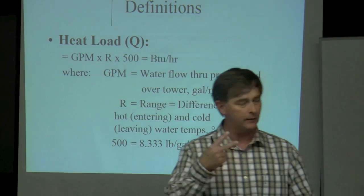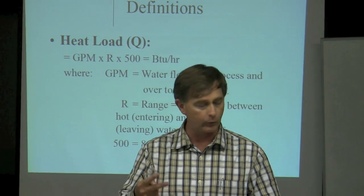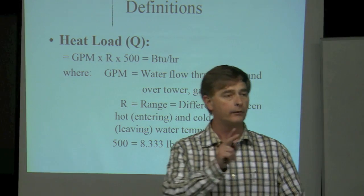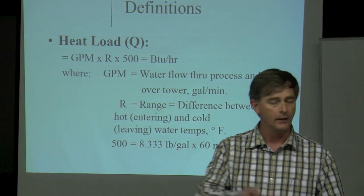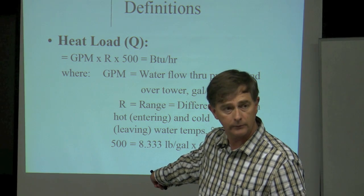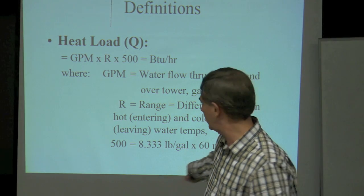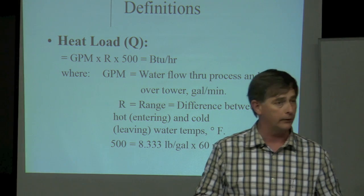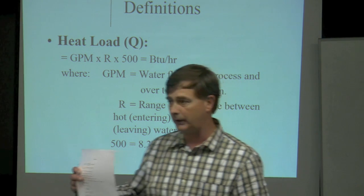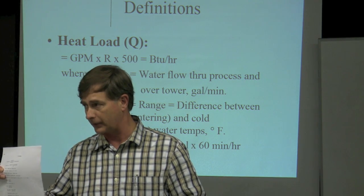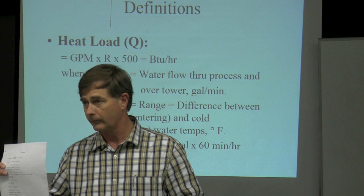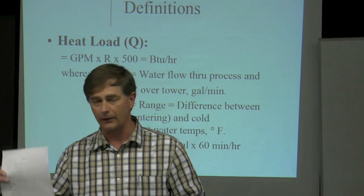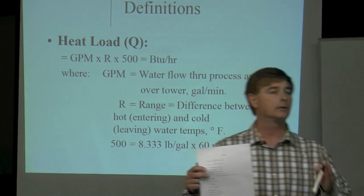If you look at the second formula on your sheet, tons equals delta T times GPM divided by 24 — that's assuming you're on the evaporator side. If you want to apply that formula to the cooling tower side, the math works the same, but instead of using the factor of 24, you use a factor of 30. That doesn't show on your sheet, so just write a note beside that second formula — everything is the same, just change the 24 to 30. That'll give you the performance of your cooling tower.